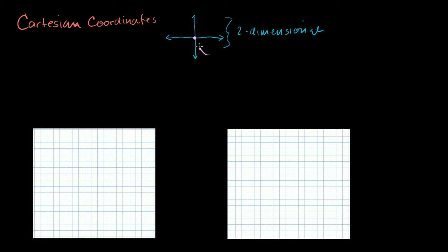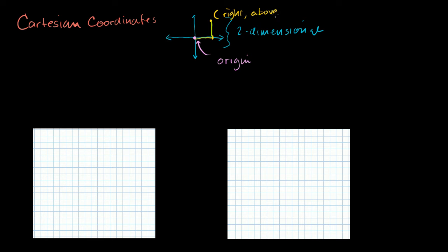We call that reference point the origin. If we want to specify some other point on that origin in Cartesian coordinates, we essentially just say: how far to the right or left are we of that origin? And then we also say how far above or below that origin. So the first coordinate is how far to the right of the origin, and the second coordinate is how far above the origin.